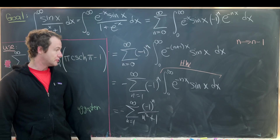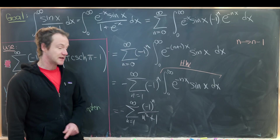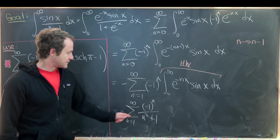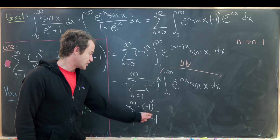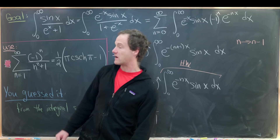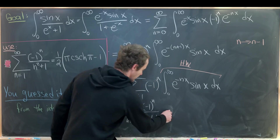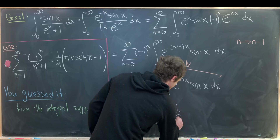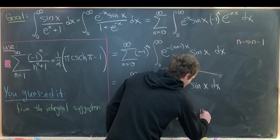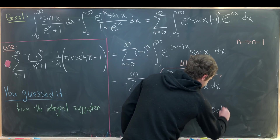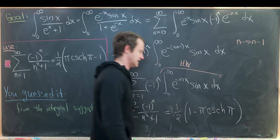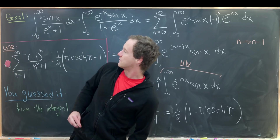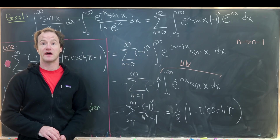That shouldn't be a surprise, as it's exactly part of the tool we already constructed. Putting in the value of this sum, we have the following value for our goal integral: one half times 1 minus π times the hyperbolic cosecant evaluated at π. That's the final value for our goal integral, and that's a good place to stop.